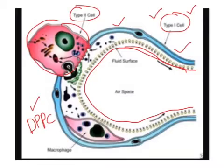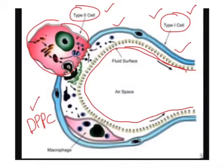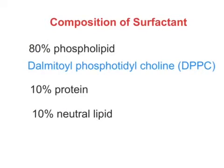By lining the alveoli, surfactant decreases the surface tension and basically increases the pressure present in the alveoli. Because of this increase in pressure and decrease in surface tension, there will be opening up of the alveoli. So sufficient surfactant is needed to keep alveoli in an open state. This surfactant is synthesized and secreted by type 2 pneumocytes, which are around 5% of alveolar cells.